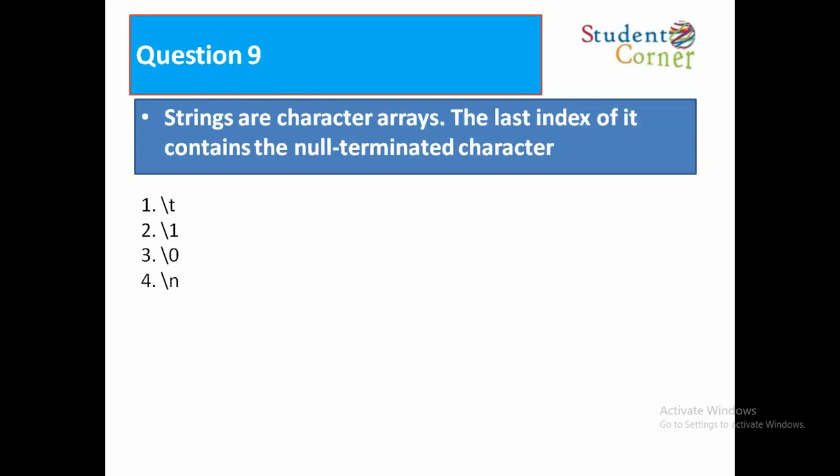Strings or character arrays, the last index of it contains the null terminated character. Answer 1, slash t, it is tab space. Slash 1, prints 1. Slash 0, it prints 0. Slash n, it contains new line. The answer is null character, that is slash 0.